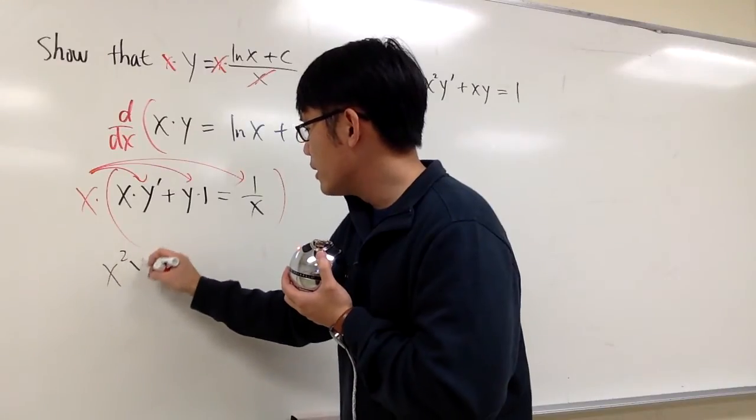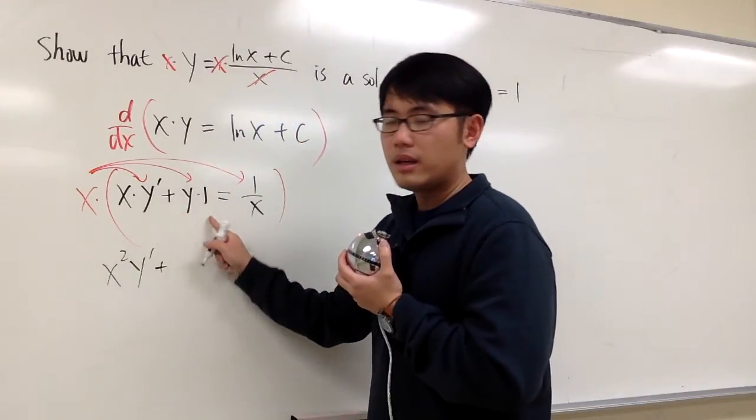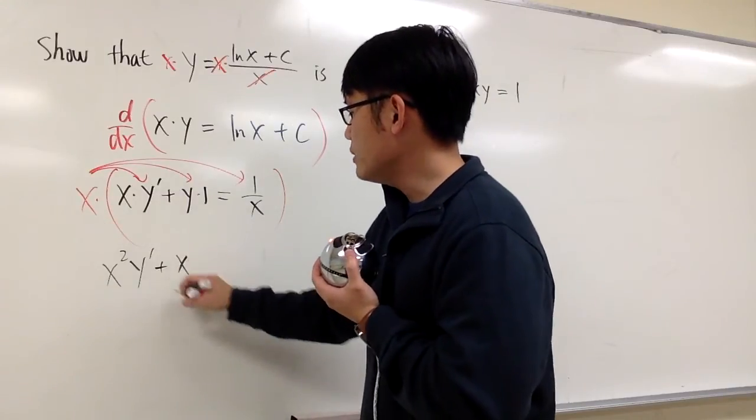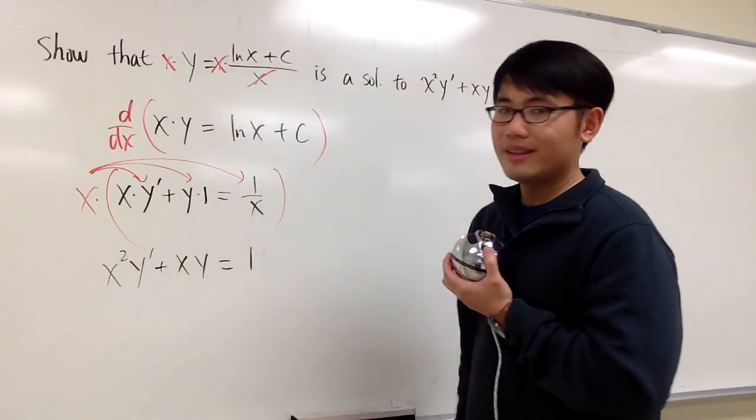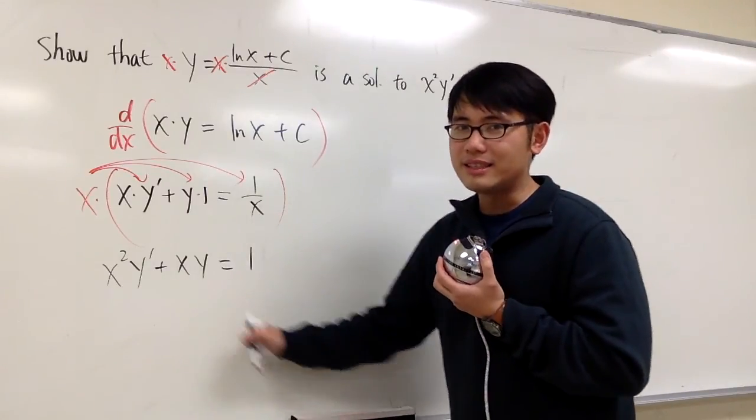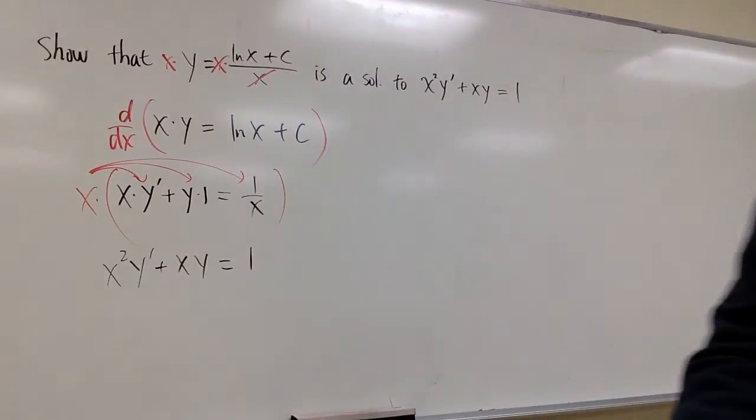we have x squared times y prime plus the y times 1 is just y times x. We can put the x first, so we have xy. And then x times 1 over x is just equal to 1. And you see, this is exactly the differential equation that we have. So that's what we have.